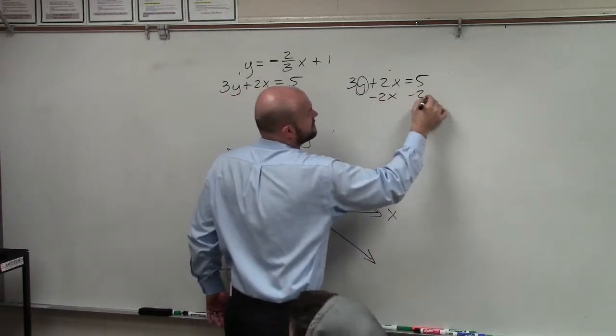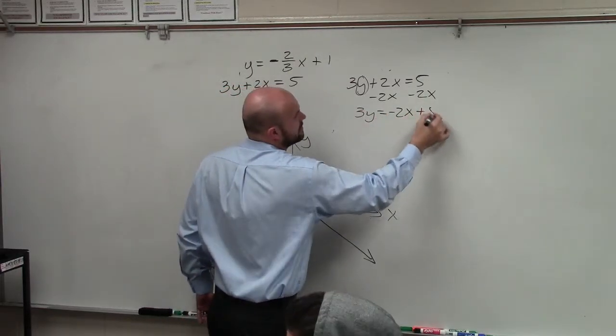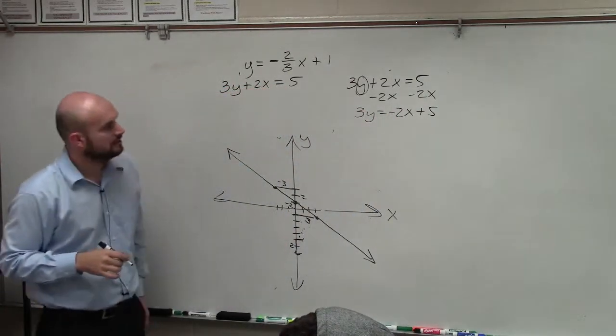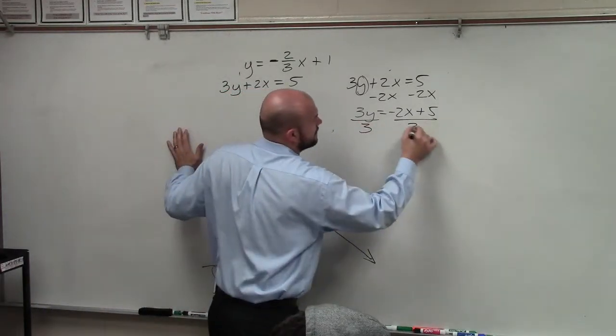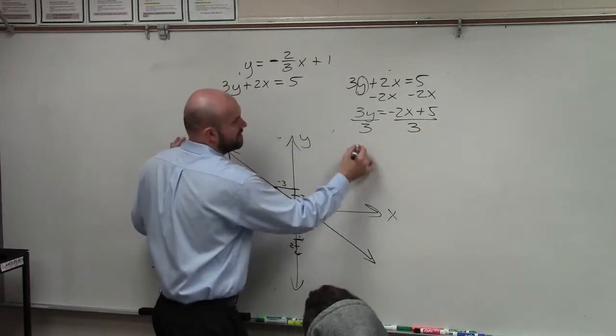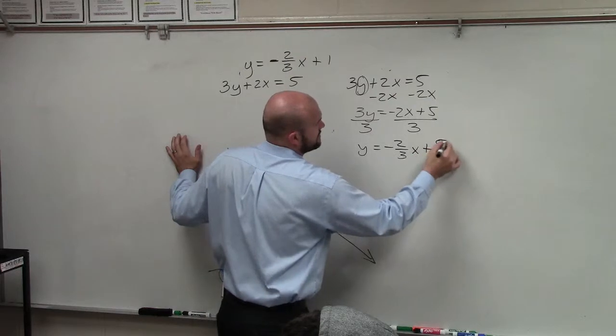So you subtract 2x on both sides. Now I have 3y equals negative 2x plus 5. All right? Now, to solve for y, I undo multiplying by 3. So I have y equals negative 2 thirds x plus 5 thirds.